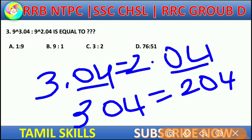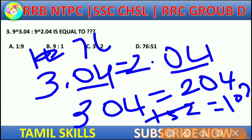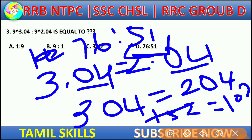Now we solve by cancelling common factors. We cancel from 304 and 204. After cancellation, we arrive at the simplified ratio answer.